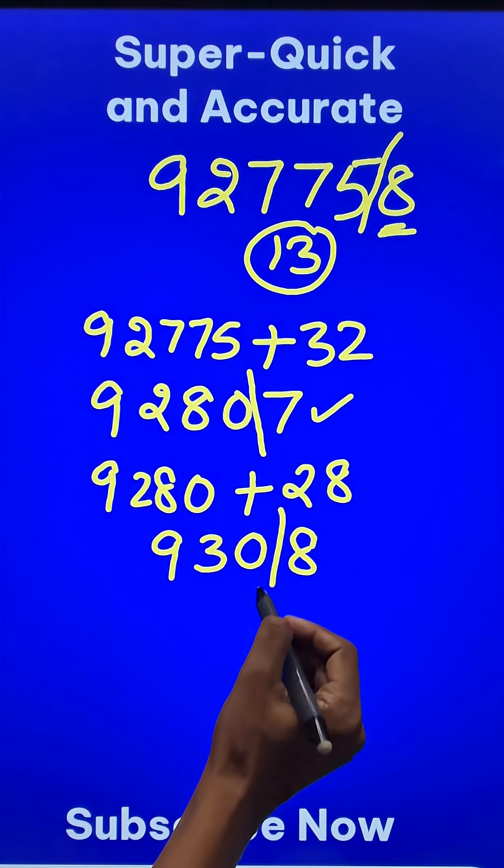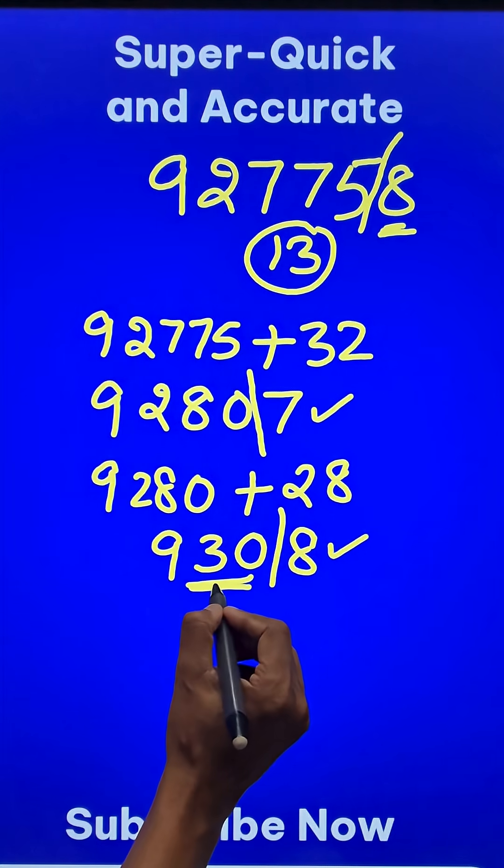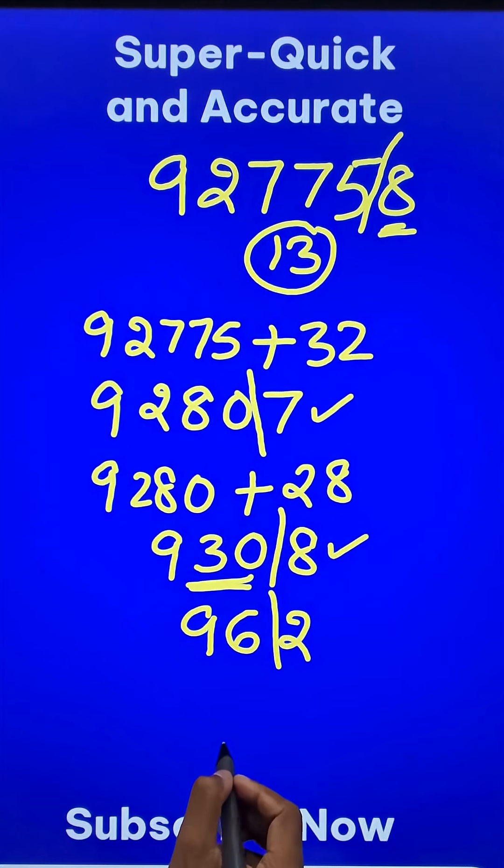Finally, we have another step. So we have to do 4 times 8 and add it to this. 4 times 8 is 32. So this becomes 962. One more time, 4 times 2 is 8, and when you add these two, you will get 104.